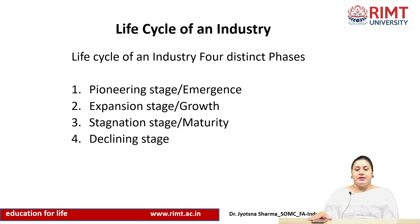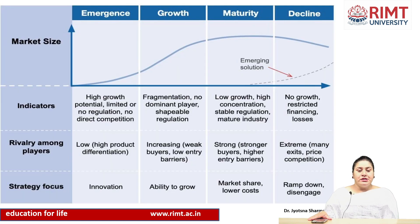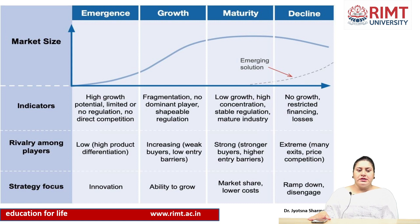To better understand industry analysis, let us look at the life cycle of an industry. There are mainly four distinct phases: first is the pioneering stage, also known as the emergence or introduction phase; second is the expansion stage, also termed as the growth stage; third is the stagnation or maturity stage; and the last is the decline phase. The main points of differentiation will be discussed in terms of indicators, rivalry among players, and strategy focus.